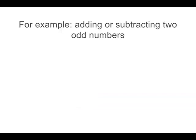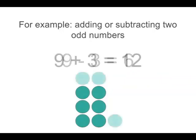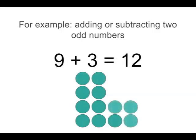Now let's look at what happens when we add or subtract two odd numbers. Let's look at 9 take away 3 equals 6 as our example. You can see that when we subtract the odd number, it takes away the odd property, so our answer is even. And if we add an odd number, it also removes the odd property, so that our answer is even. So when we add or subtract two odd numbers, our answer will always be even.